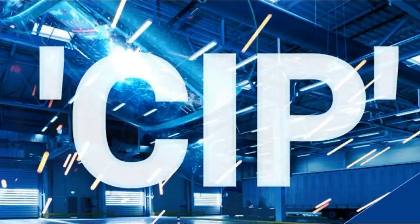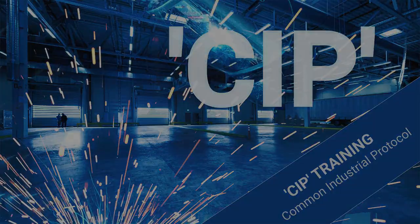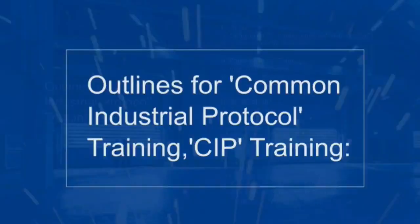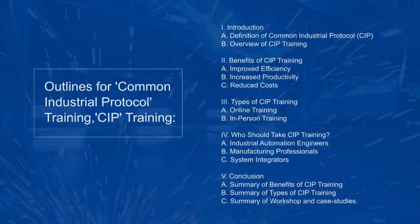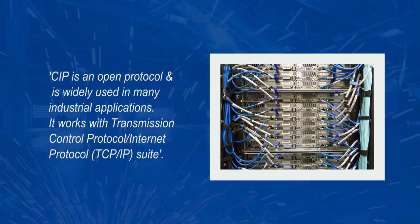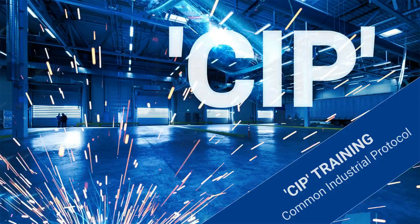Common Industrial Protocol CIP Training for Industrial Automation Systems, proudly powered by Tonex. The Common Industrial Protocol is an industrial communications protocol used in industrial automation applications such as factory automation, process control, and distributed control systems. CIP is a standardized, open protocol developed and maintained by the Open DeviceNet Vendors Association.